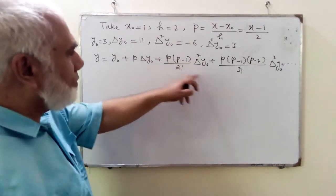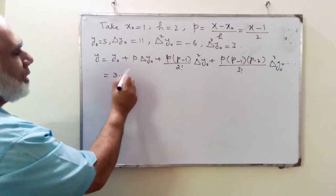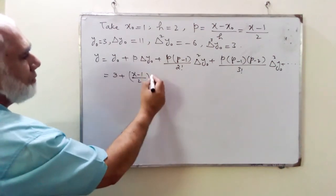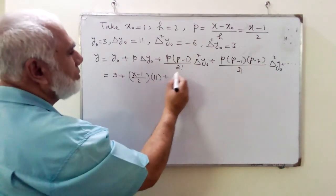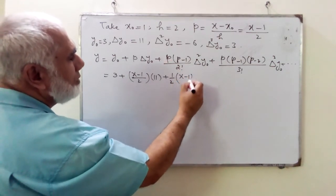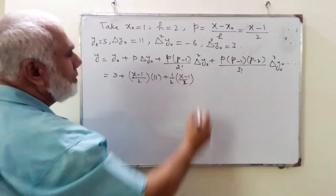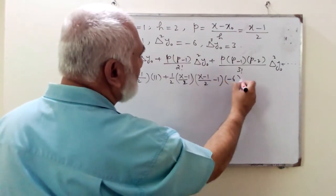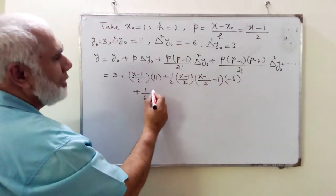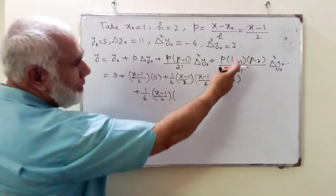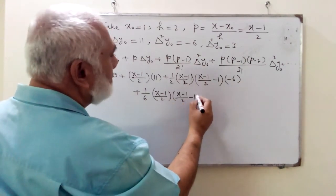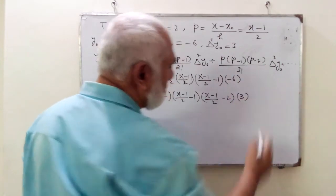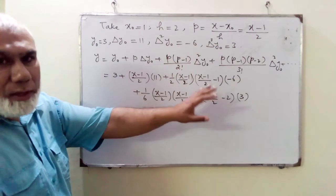Now we substitute all values into the formula. y = 3 + [(x−1)/2]·11 + (1/2)·[(x−1)/2]·[(x−1)/2 − 1]·(−6) + (1/6)·[(x−1)/2]·[(x−1)/2 − 1]·[(x−1)/2 − 2]·3. We have placed all values of p as well as the delta values into the formula.